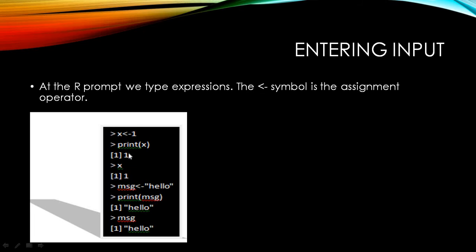Now these are integers or numeric values. Like I'm assigning X to be a numeric value. When I'm assigning characters — for example, this is MSG, short for message — I'm assigning the value for message to be hello. This is the assignment operator. So MSG is assigned the value hello. Wherever you're using characters, it has to be put in double quotation marks. So hello is a character and it's put in double quotes.